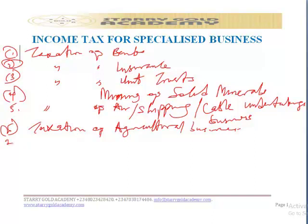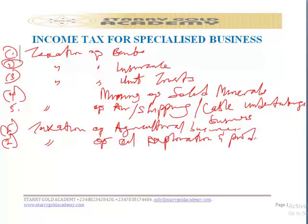Chapter 6 covers the taxation of agricultural businesses. In Chapter 7, we shall be looking at the taxation of oil exploration and production companies.